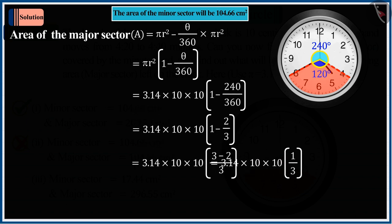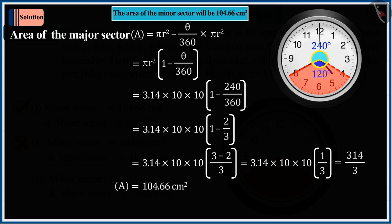But you did not do that, due to which the value of A derived by you is 104.66 square centimeters, which is incorrect.